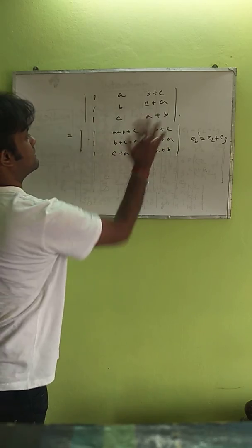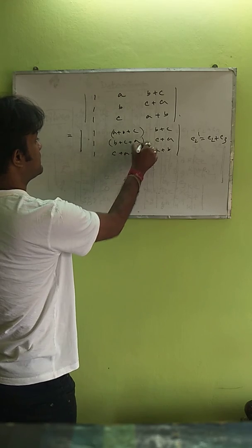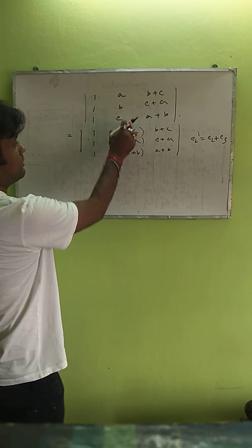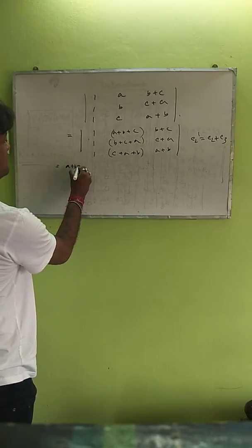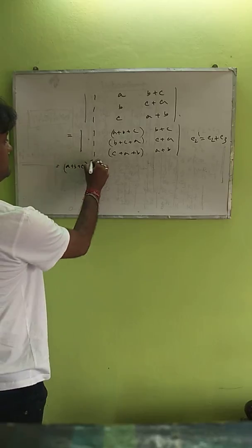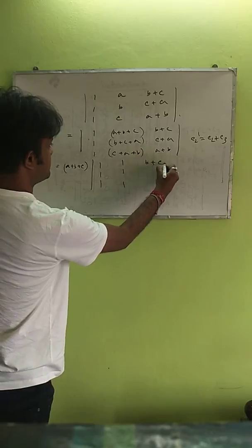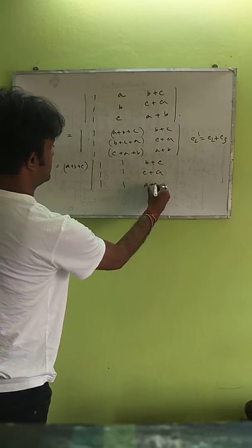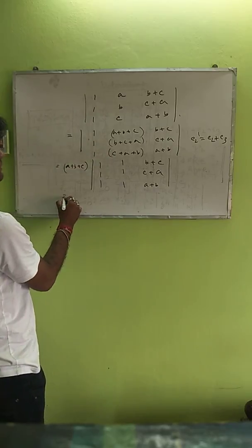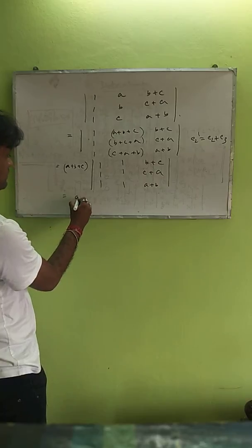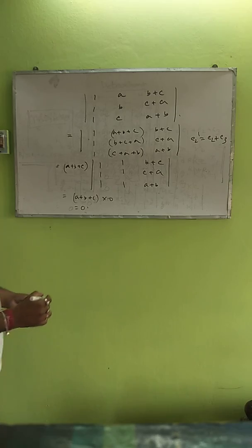The first and third columns remain unchanged. But here, the second column elements are all a+b+c. So by taking a+b+c common from the second column, we get 1, 1, 1 in that column. The first column and second column become identical, so the value is (a+b+c) × 0 = 0.